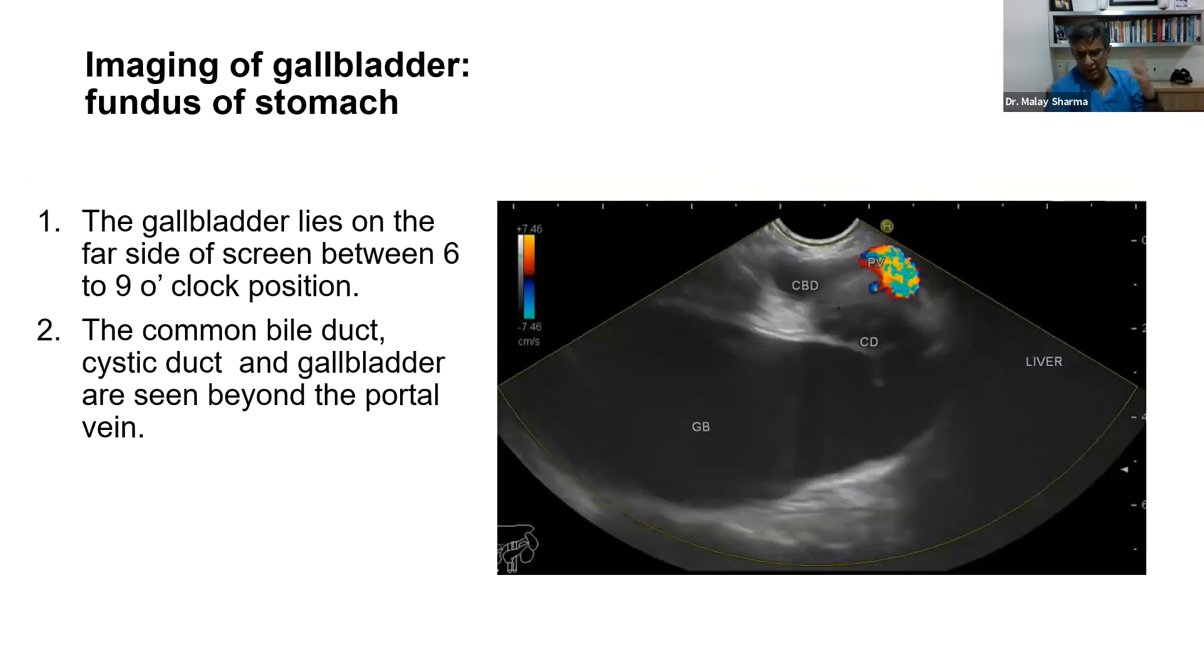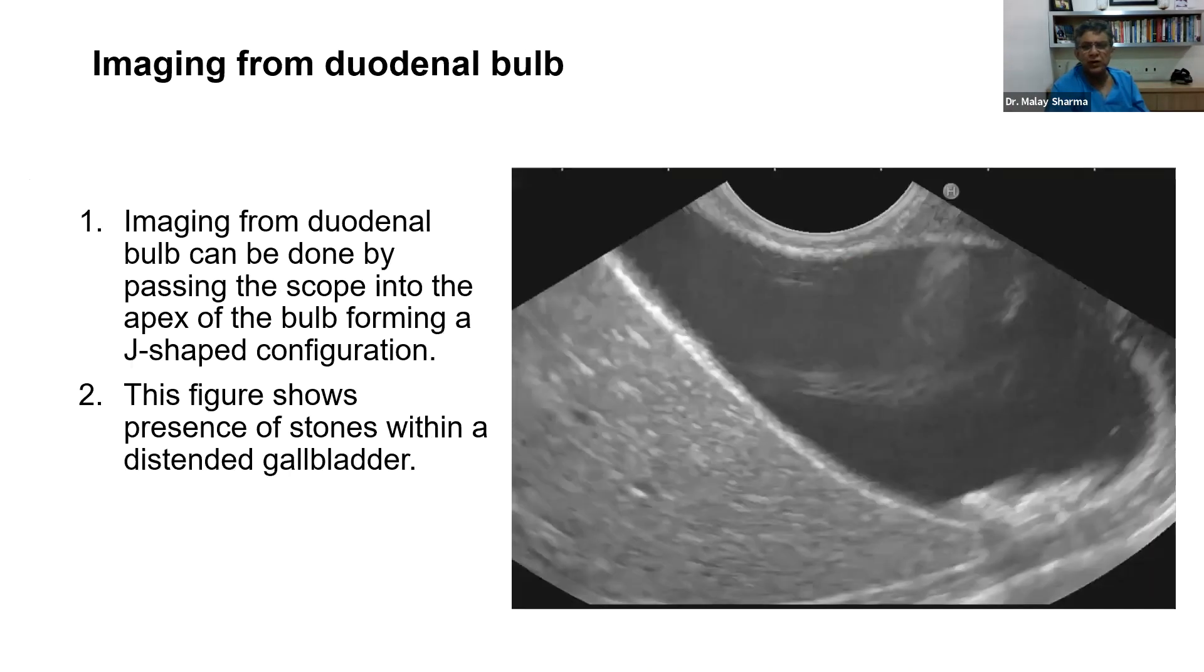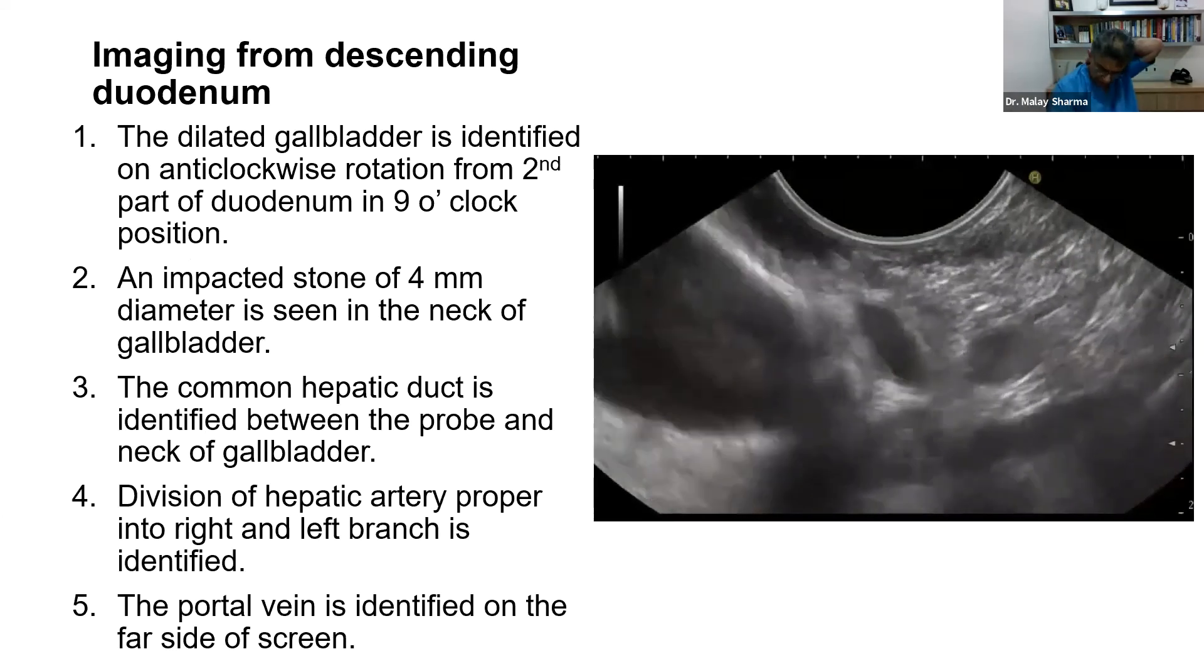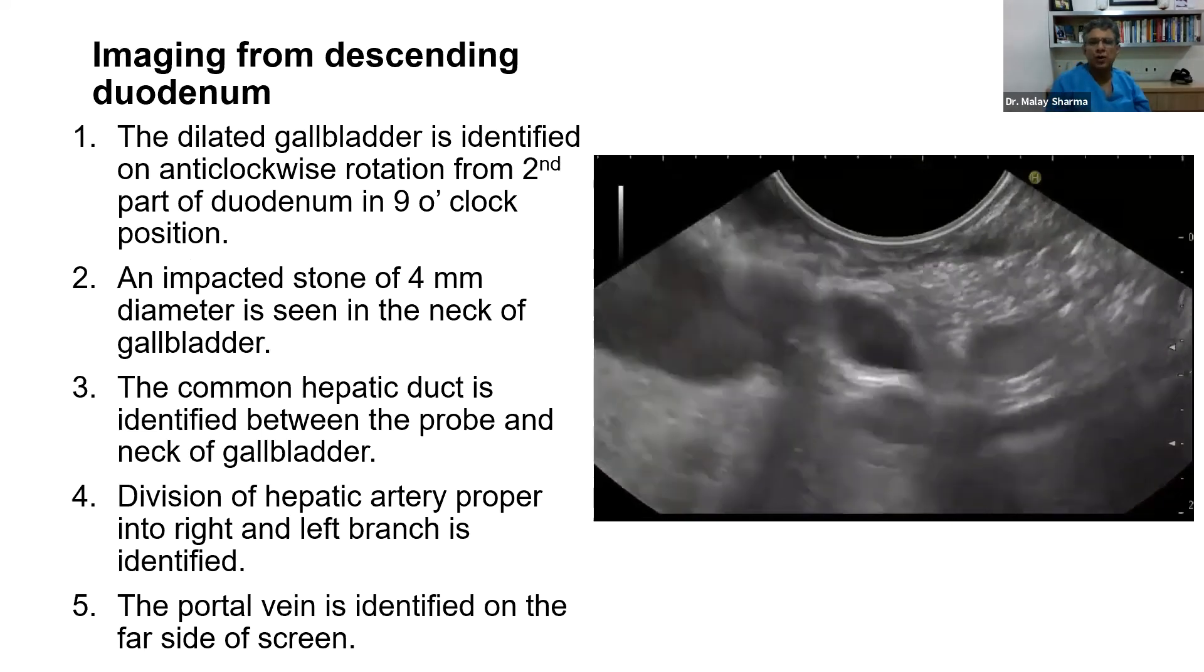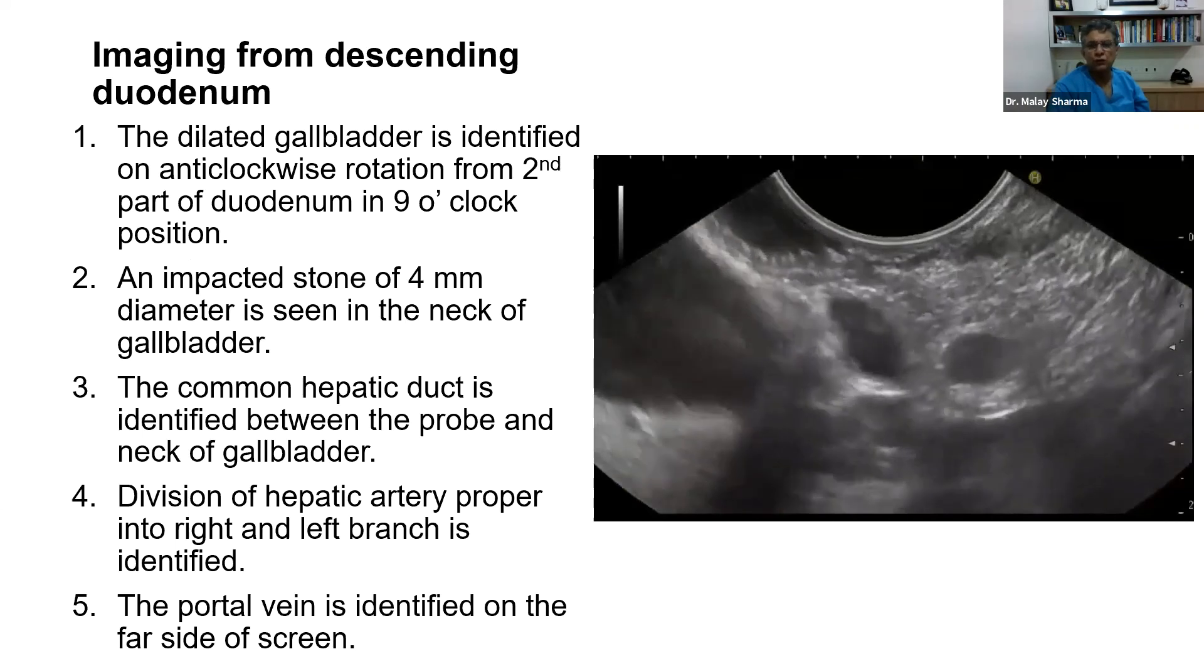For example, in this case we do a few videos to show how you do imaging. The gallbladder lies when you see from the stomach at six o'clock position. When you see it from the duodenal bulb, you will find the gallbladder roughly at three o'clock position. When you see the gallbladder from the descending duodenum by rotating anticlockwise and moving the up-down knob up, you will find it at nine o'clock position.